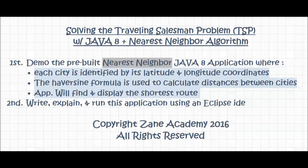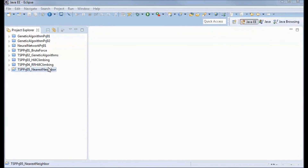This tutorial will cover solving the Traveling Salesman Problem with Java 8 and the nearest neighbor algorithm. I will start with a demo of a pre-built application, and then I will write, explain, and run this application using an Eclipse IDE. Each city is identified by its latitude and longitude coordinates, and the Haversine formula is used to calculate distances between cities. The application will find and display the shortest route.